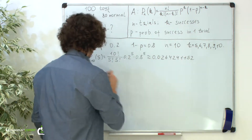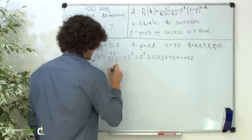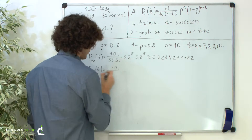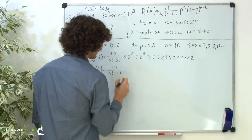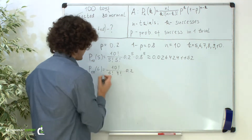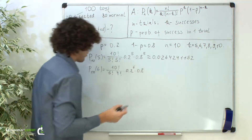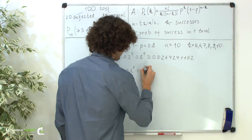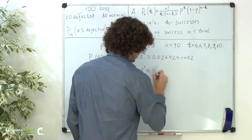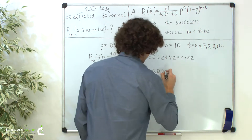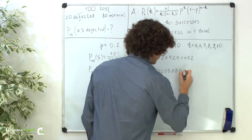Now the second case: the probability of 6 out of 10 equals 10 factorial over 6 factorial times (10 minus 6) factorial, which is 4 factorial, times 0.2 raised to the sixth power, times 0.8 raised to the power of 10 minus 6, which is 4. Here we get approximately 0.005505024.